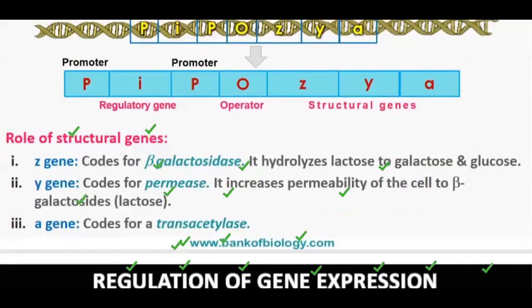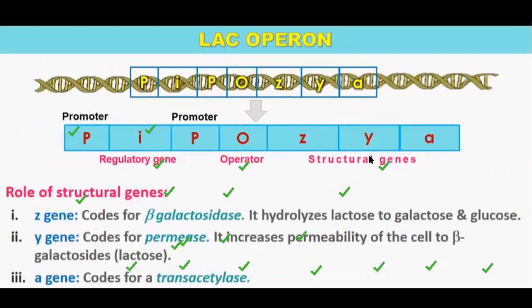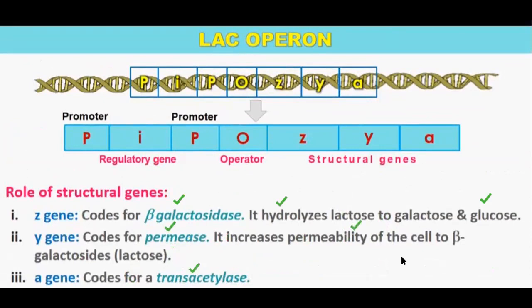The role of structural genes: Z codes for beta-galactosidase, which hydrolyzes lactose to galactose and glucose. Y codes for permease, which increases the permeability of cells. And A codes for transacetylase. This is the function of the different structural genes found in the lac operon.